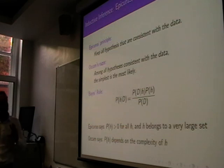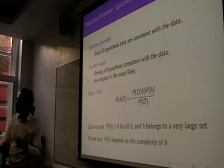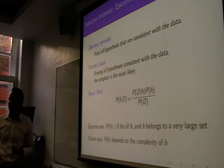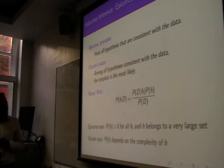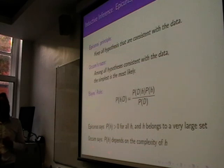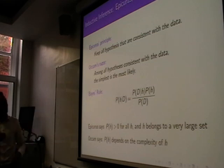What we want to do is have the prior probability of different explanations about the world in proportion to how complex they are. Simple explanations are more likely; more complex explanations are considered less likely. In terms of Bayes' rule, Epicurus says that the probability, our prior probability, should be above zero for all h. So we're considering to start with this huge range of hypotheses, and h belongs to some very large set. We don't want to exclude anything before we even begin. And then Occam says that the probability of a hypothesis depends on the complexity of h. What we need to do if we want to really formalize this is say what this very large set is and come up with some measure of the complexity of the hypotheses. Then we can formally formalize both of these philosophical principles and come up with some sort of inductive learning system that does that.